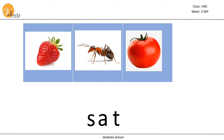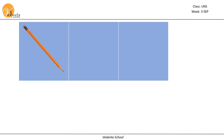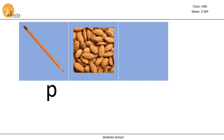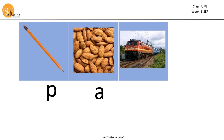Here the picture is pencil. Pencil starts with the p sound. Almond starts with the a sound. Train starts with the t sound.